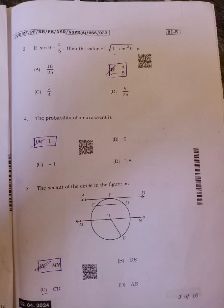Third question, if sin theta equals 4 by 5, then the value of square root of 1 minus cos square theta is option B, 4 by 5, because here 1 minus cos square theta will be equal to sin square, square and square root get cancelled, then sin theta equals 4 by 5.